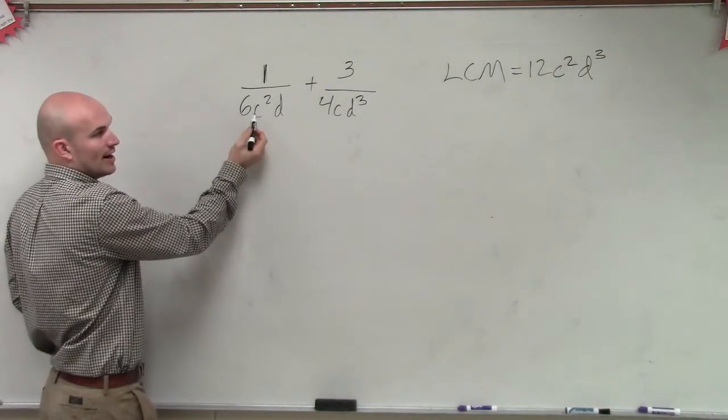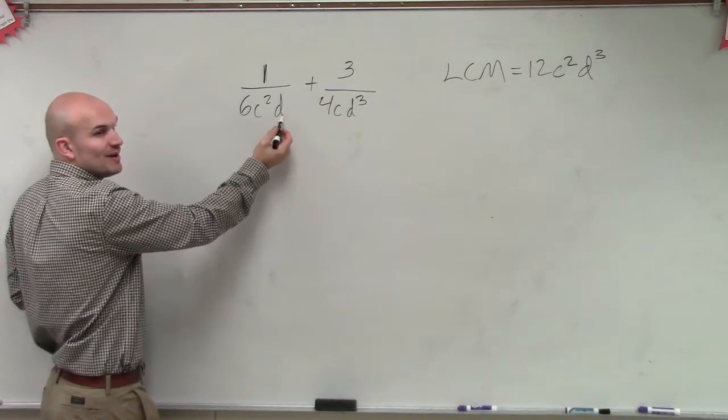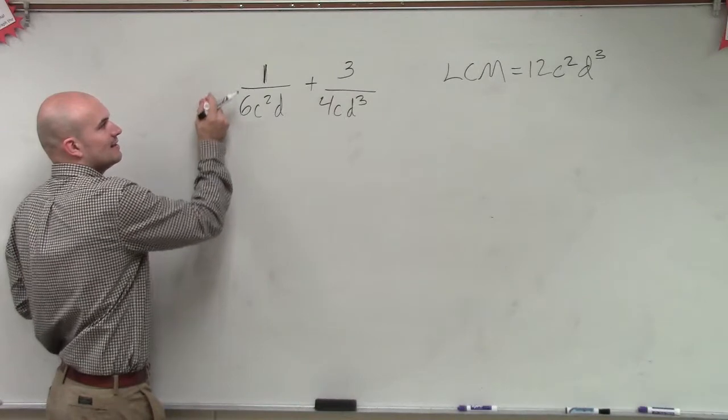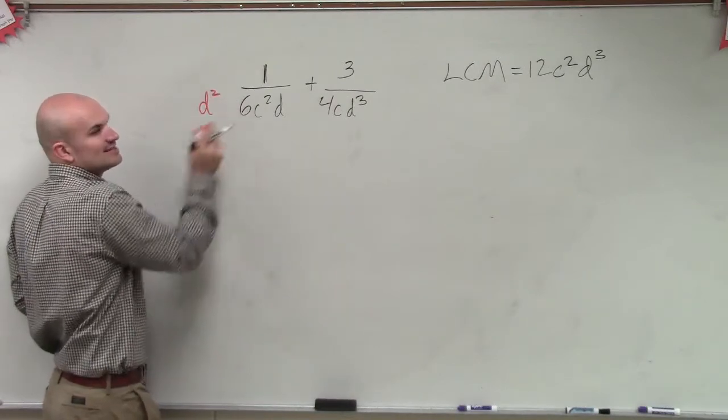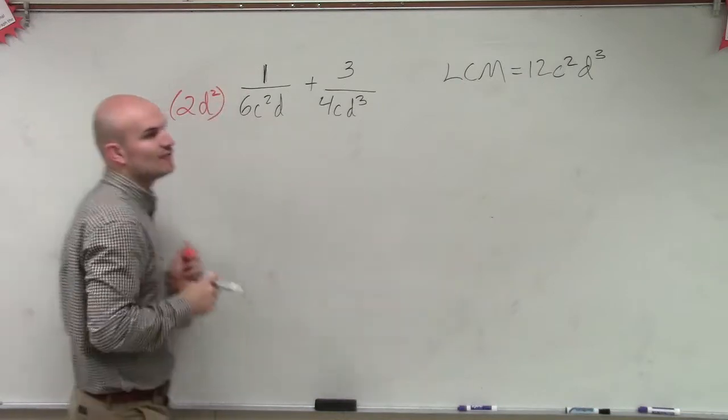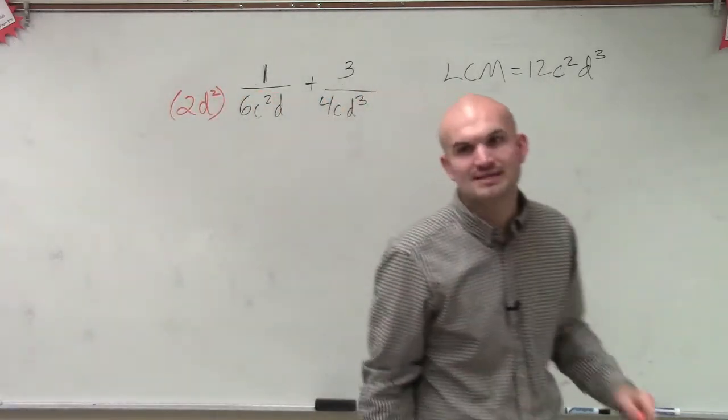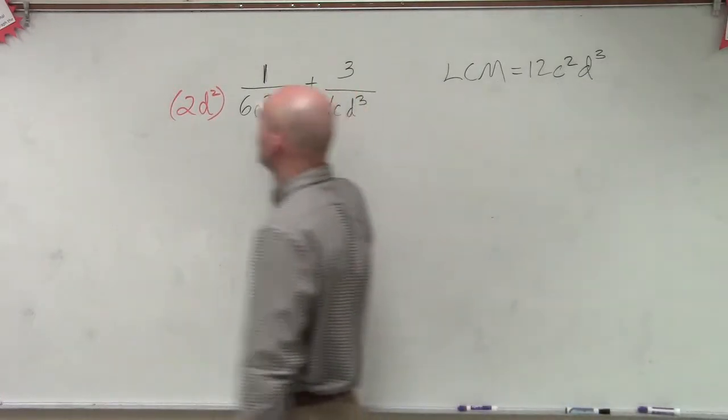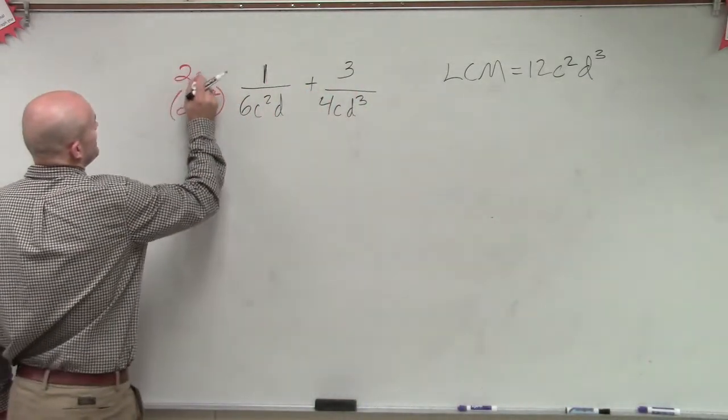I want to get my denominator to now be 12c²d³. Well, I already have c², and I have a d. So what do I need to multiply to get d to d³? d². And to get a 6 to a 12, I need to multiply by 2. Now, to keep the fraction equivalent, you cannot just multiply the denominator. You have to multiply the denominator and the numerator. So I'm going to multiply 2d² on the top as well.